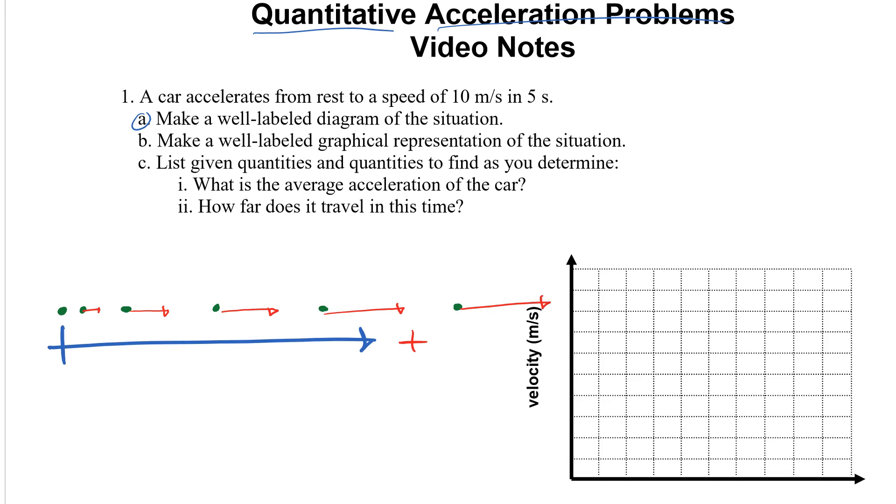So that looks pretty good. I think that's enough for my well labeled diagram. I could also make a picture of a car and say, oh it's moving, starts at rest and it's moving this way. I think the motion map tells more of a story.